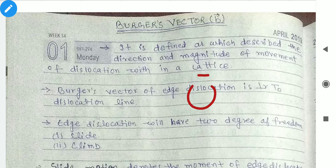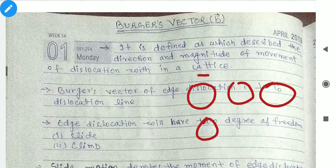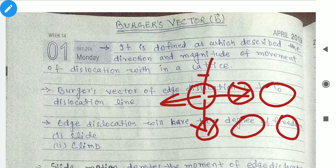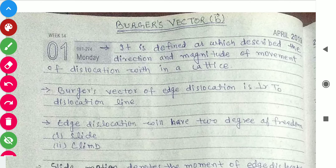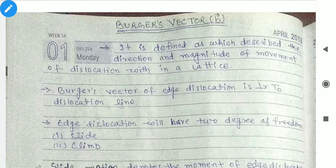It gives the direction of dislocation — which side it is producing, whether right-side, down-side, or up-side, and at which angle. It also gives the magnitude — which distance the dislocation moves. The direction of edge dislocation is perpendicular to the dislocation line.